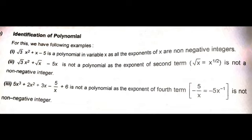In the third example, 5x³ + 2x² + 3x − 5/x + 6, it is not a polynomial. The exponent of the fourth term, −5/x, can also be written as −5x^(−1), and −1 is not a non-negative integer. So it is not a polynomial.